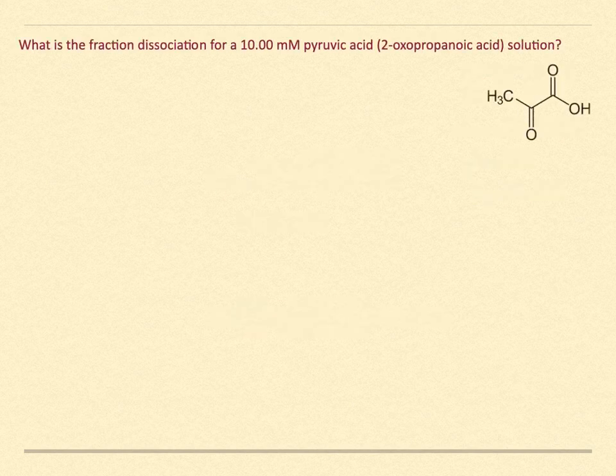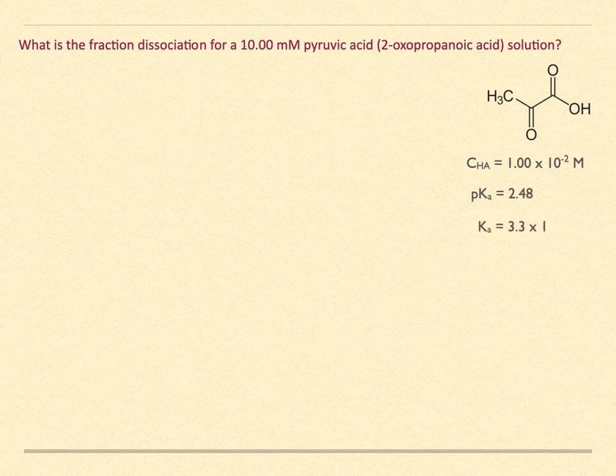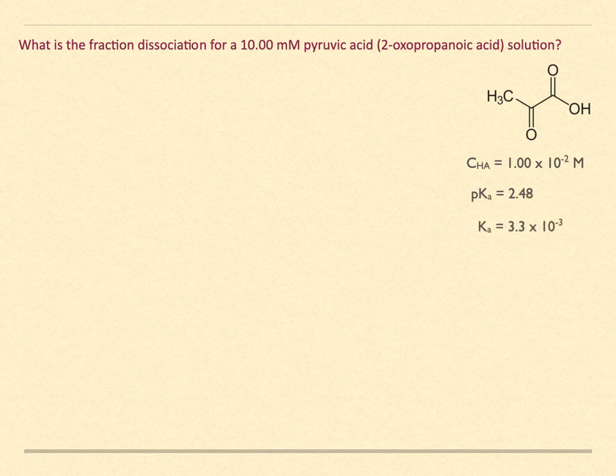Let's consider another 10 millimolar solution, but this time the molecule is known as pyruvic acid. Its IUPAC name is 2-oxopropanoic acid. Its pKa is 2.48, so it is a stronger acid than 2-naphthenoic acid.